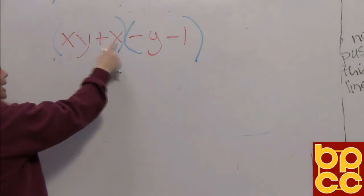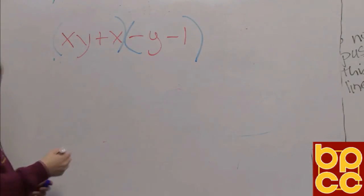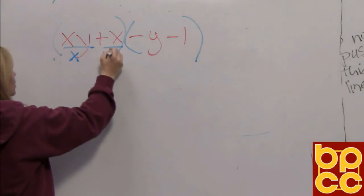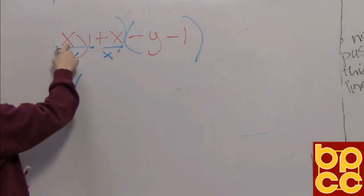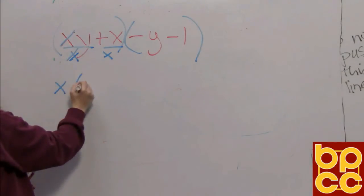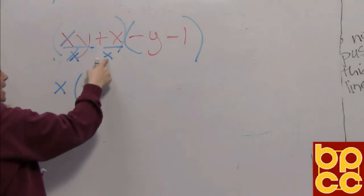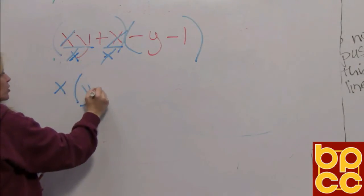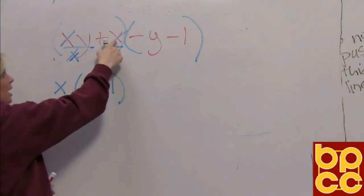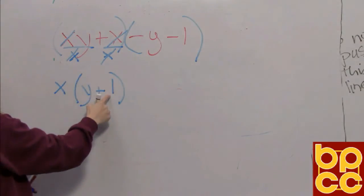xy and x can both be divided by what? Very good, x. So you pull out the x, you tell me what's left. These x's are going to cancel and leave us with y. These x's are going to cancel, but you can't leave it blank because it's a plus sign. So that's plus 1. A letter divided by itself is 1.